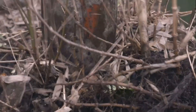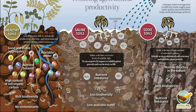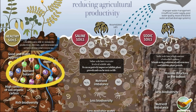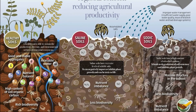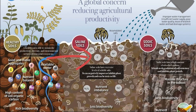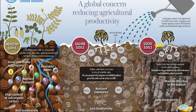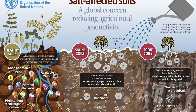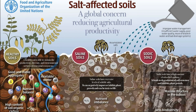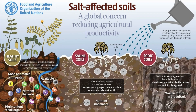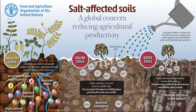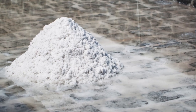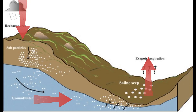Soil salinity is the excessive accumulation of sodium, potassium, magnesium, chlorine, sulfates, carbonates, and bicarbonates. A measure of soil salinity is the amount of salt content in soil water, expressed in grams per liter of water.